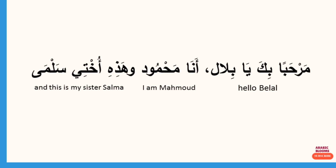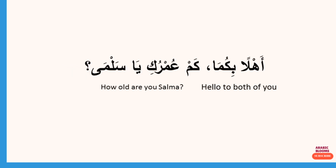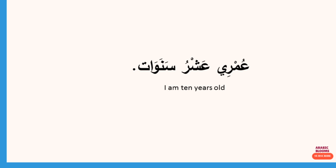أنا محمود — I am محمود. وهذه أختي — And this is my sister, سلماء, that's the name of his sister. أهلا بكما — this is dual, meaning welcome to both of you. كم عمرك يا سلماء — How old are you يا سلماء? She said عمري — my age is عشر سنوات — 10 years.